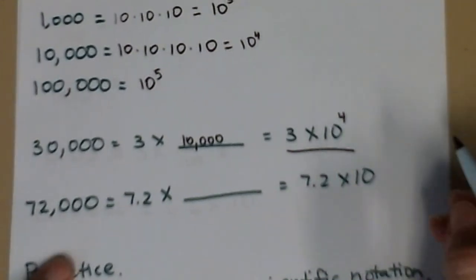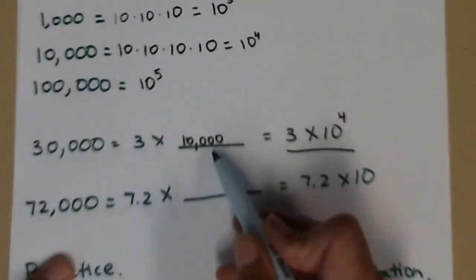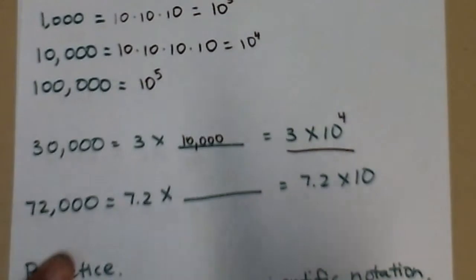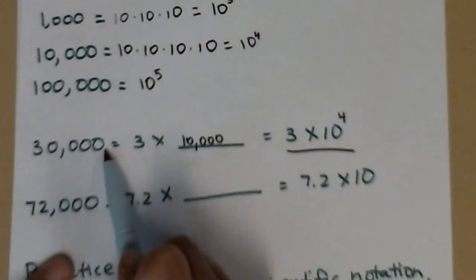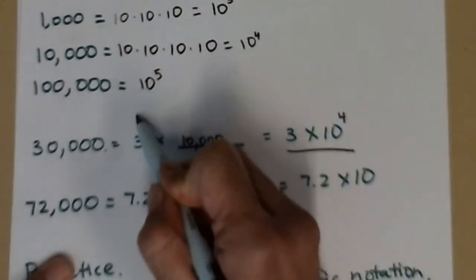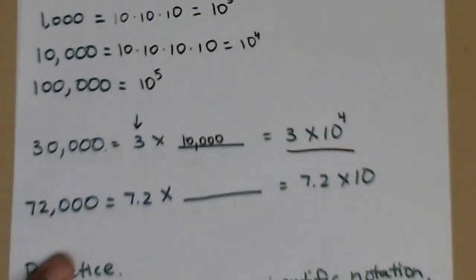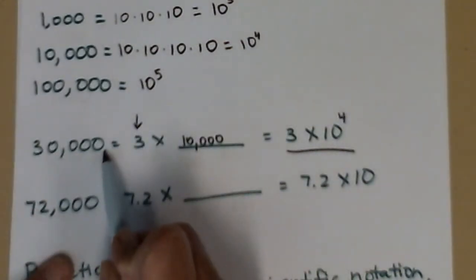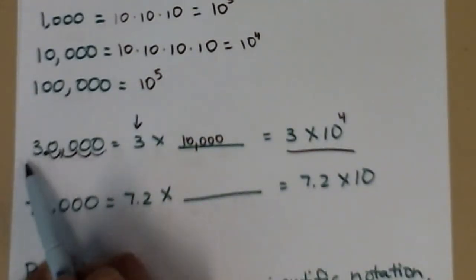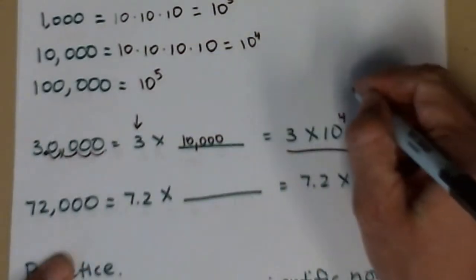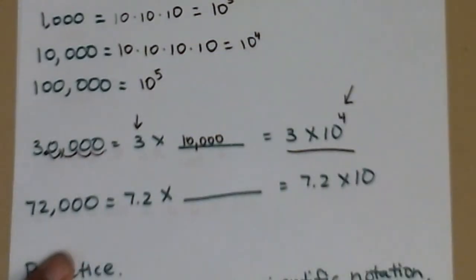Now there's another method that I typically use. I just do a swoop method. So what I do is I take my pen and I put it where the decimal currently lives, and then I swoop until I get a number that's between 1 and 10, not including 10. So it has to be 1 or bigger but not up to 10. So for this one, I would swoop 1, 2, 3, 4 places until I got to 3. 3 is between 1 and 10. I swooped 4 places and that's the power that goes on the 10.